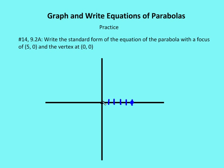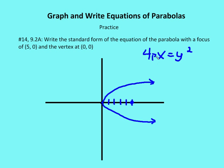Based on where the focus is and where the vertex is, I can see that my parabola is going to open to the right. So I'm going to have an equation that looks like 4px is equal to y squared. We know that the location of the focus relates to the p value, so I can plug in 5 for p, because my focus is at x equals 5. I end up with 20x is equal to y squared, and that is the equation for the parabola with vertex at (0, 0) and focus at (5, 0).